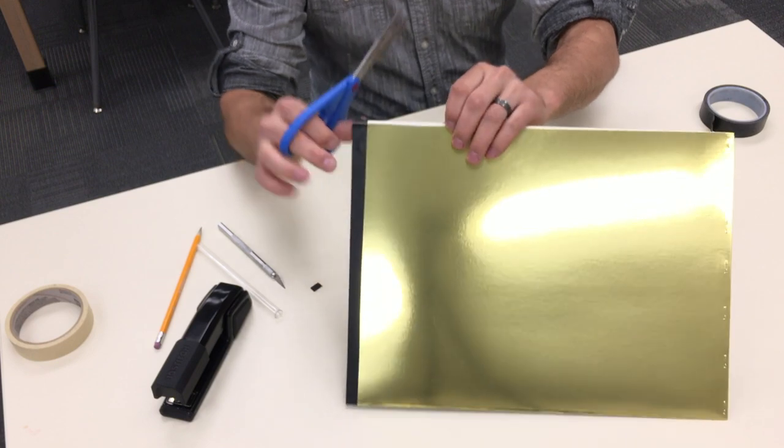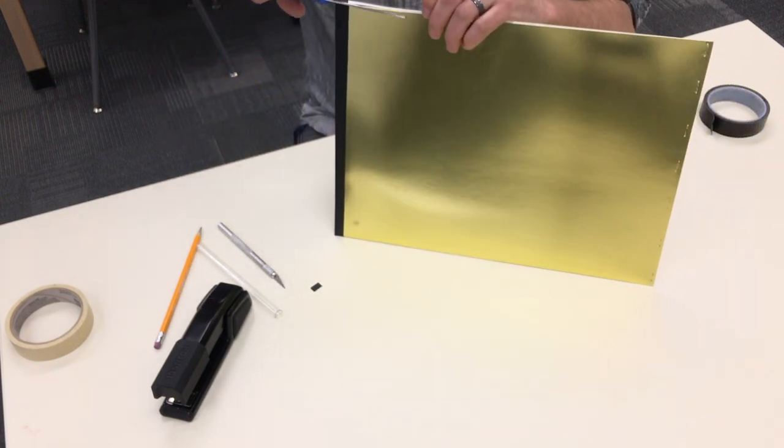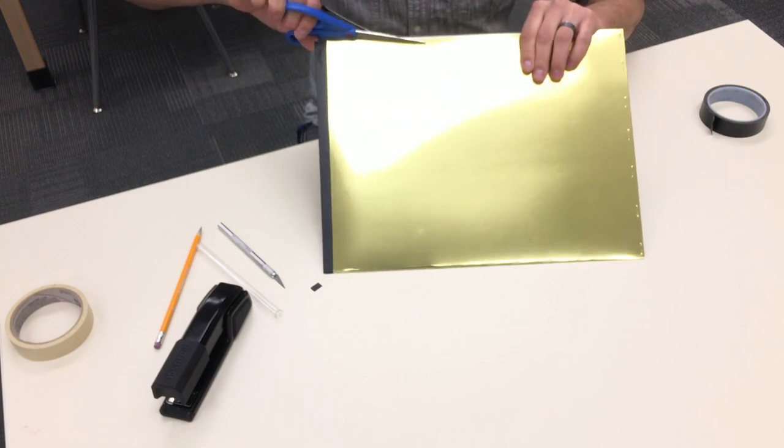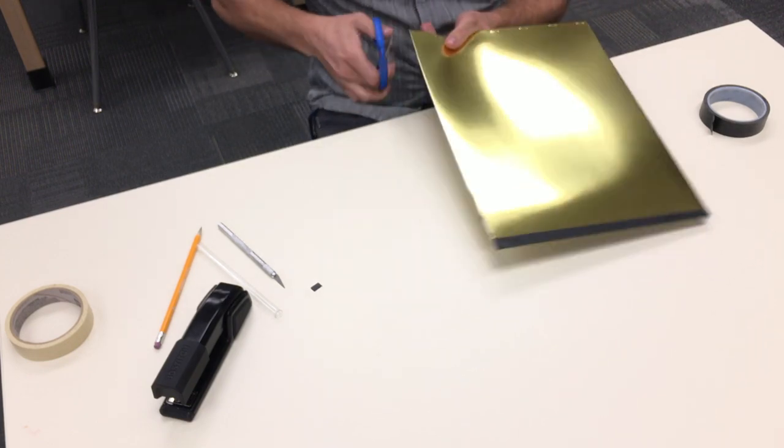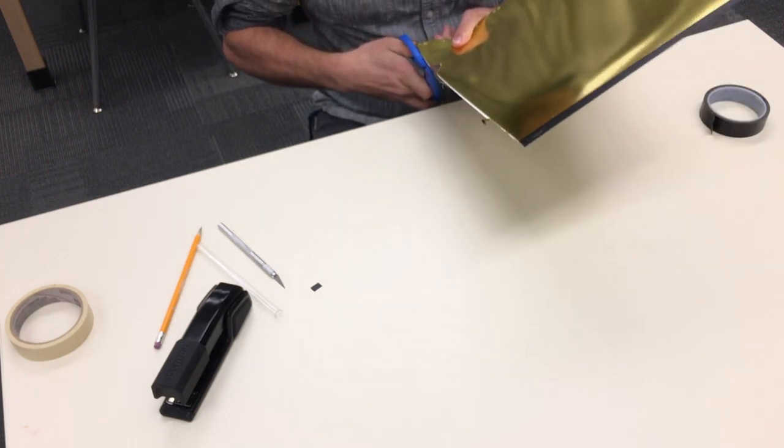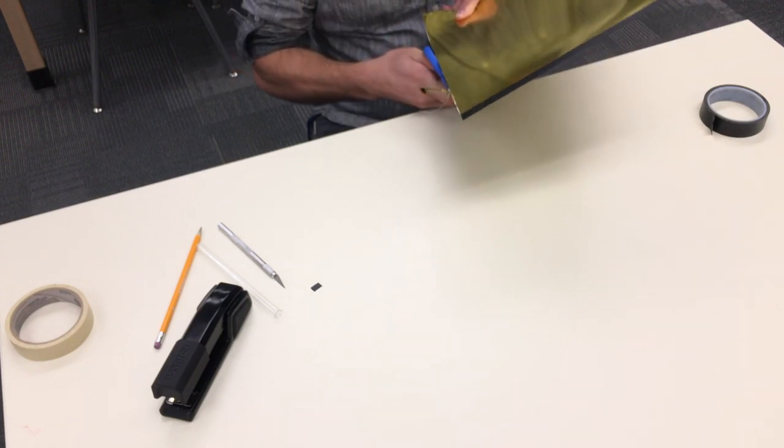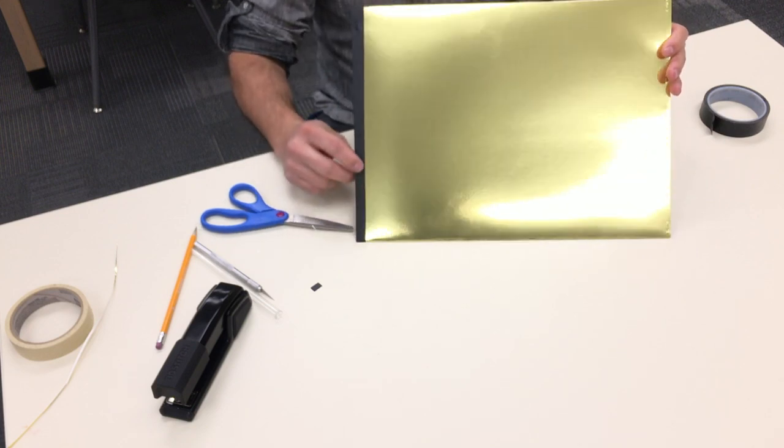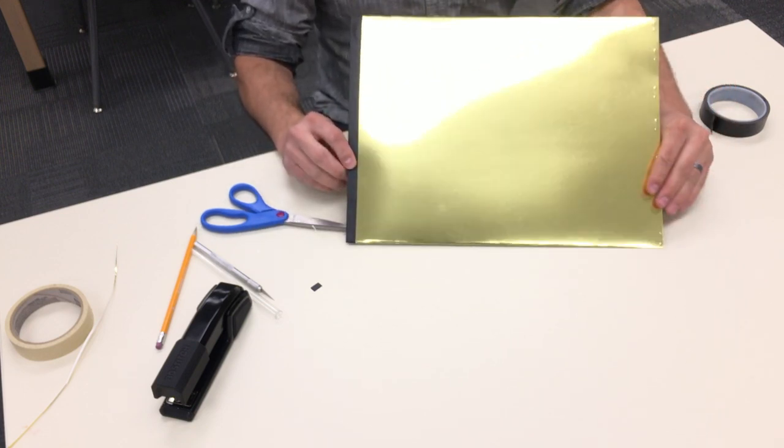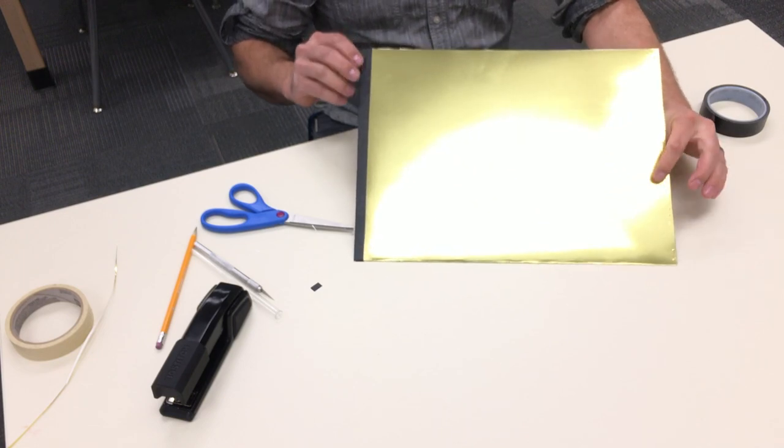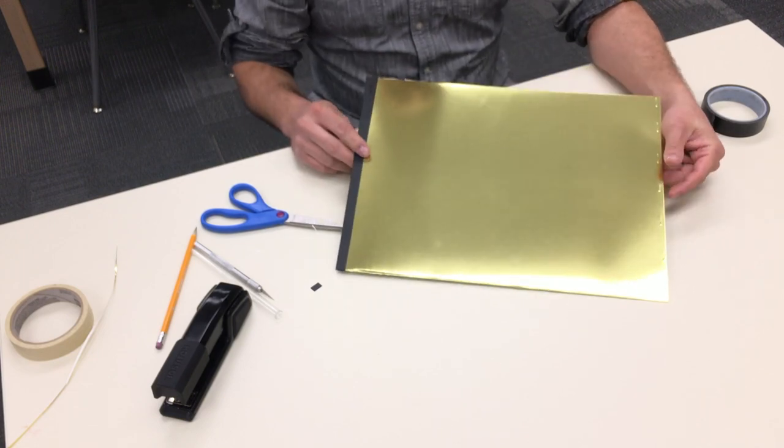My poster board is slightly off on this side, so I'm going to cut this. Alright, so I've got a nice even edge, or I could do staples. I would choose one or the other, don't do both. I'm just doing both so I can demo it.